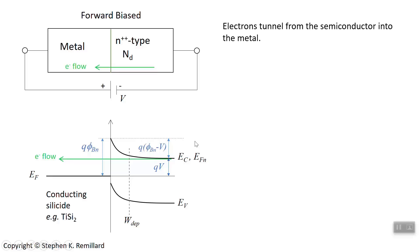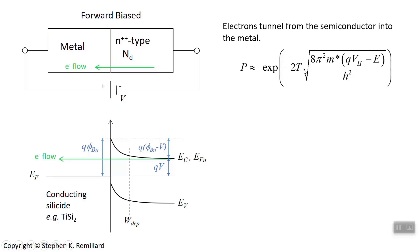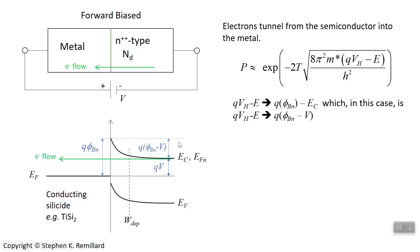We have an expression for the probability that an electron will tunnel through a barrier, based on how wide and how high the barrier is. We need to identify two things: the thickness T, and the energy difference. The barrier height that an electron needs to overcome is q times the Schottky barrier V_Bn minus q times V, because qV is where the conduction band edge is. So we replace the quantity (qV_h minus E) in the tunneling expression with q times (Schottky potential minus V).